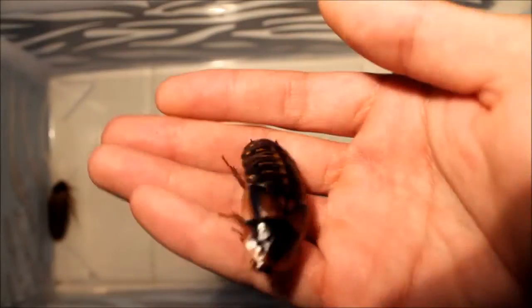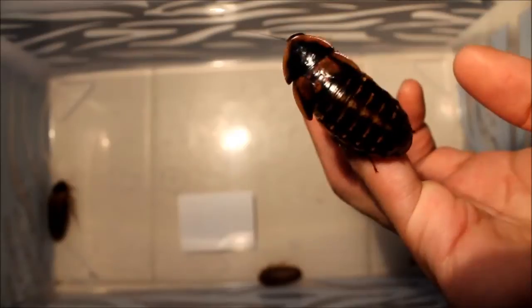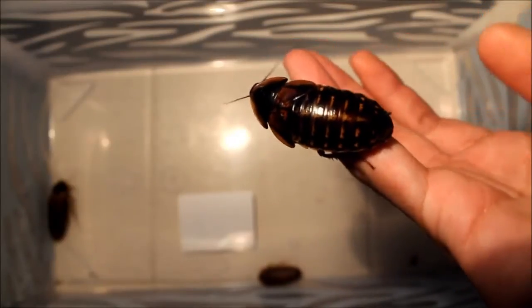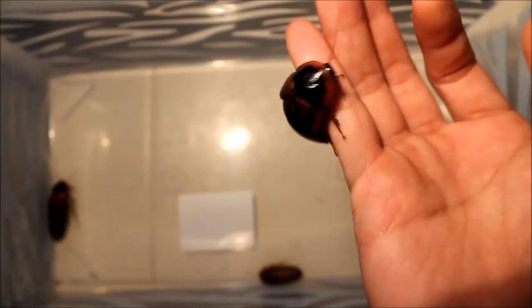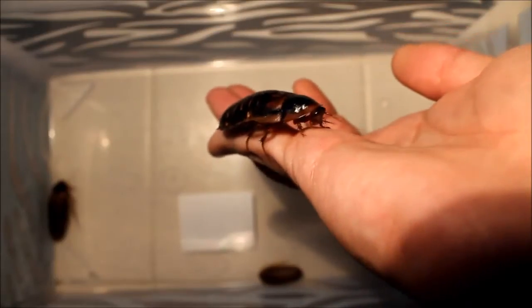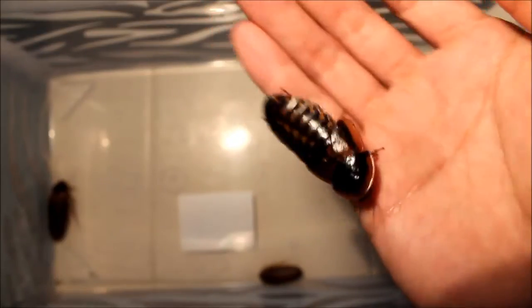This right here is an adult female. You can see how shiny she is. She almost looks like a nymph but she's a little black and shiny. She's pretty fat too. You can't really see it. She'll probably have babies pretty soon.